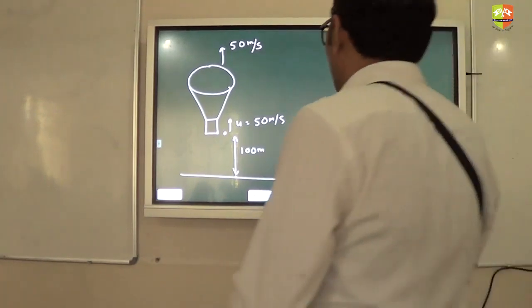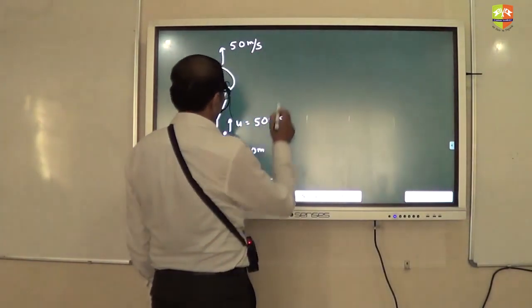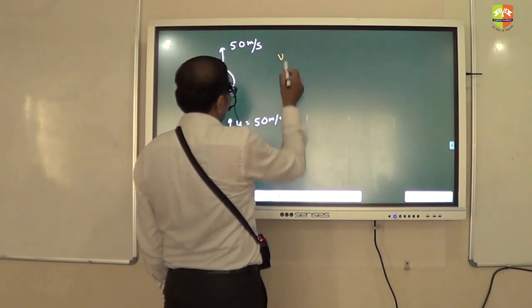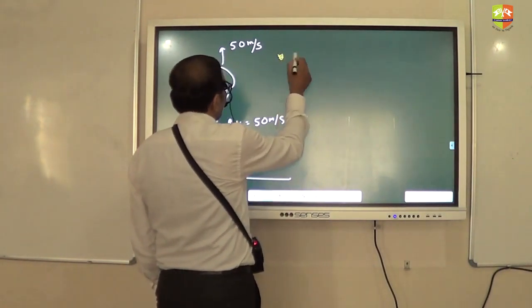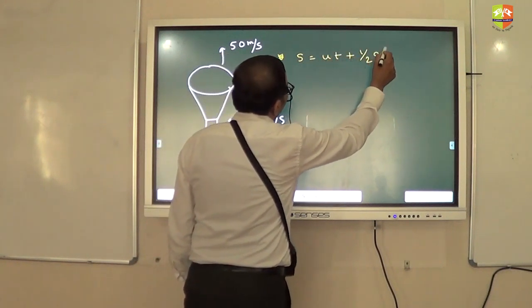Okay, so I am assuming that all of you got the equation, right? Which equation will be using here? S equal to ut plus half at square. S equal to ut plus half at square.